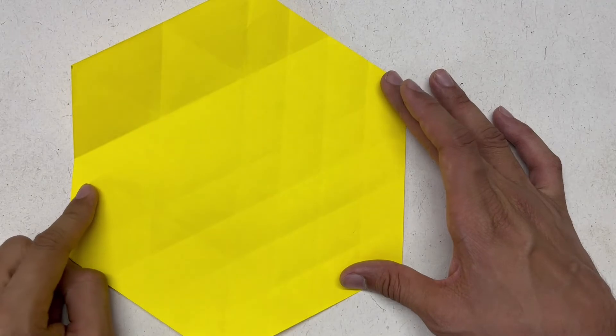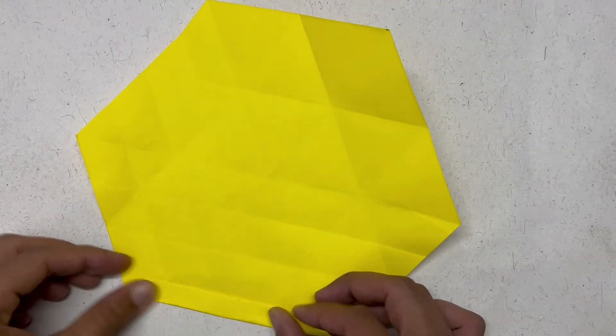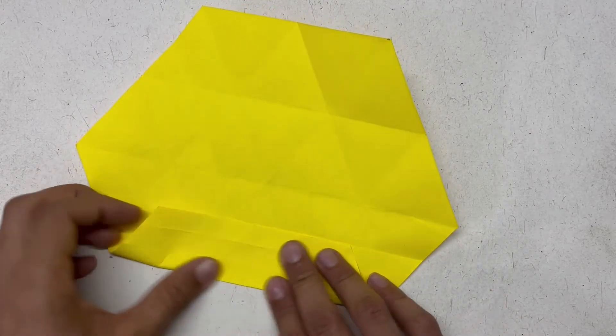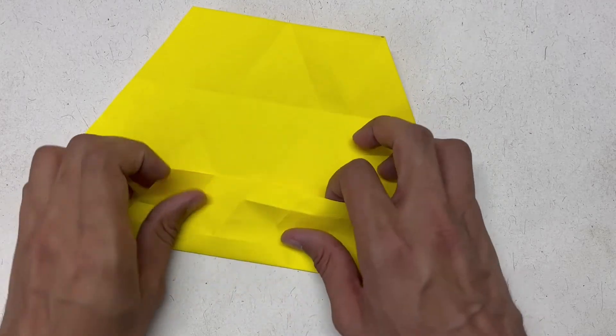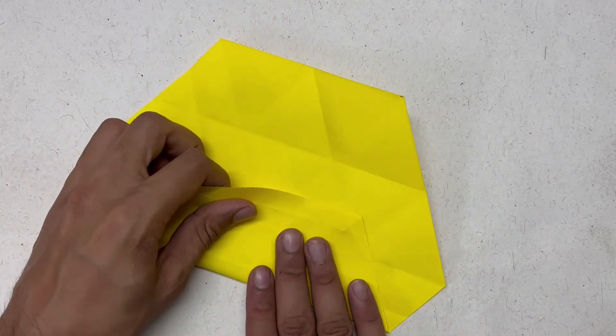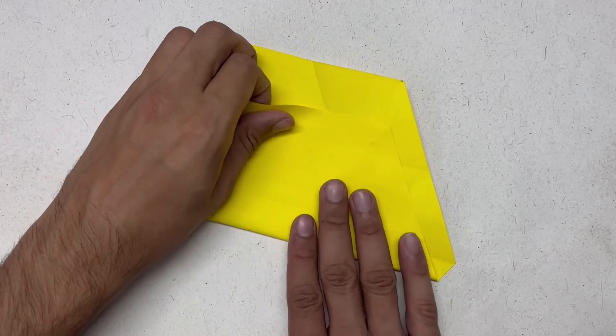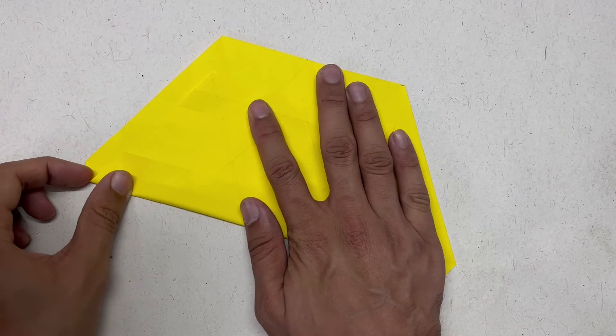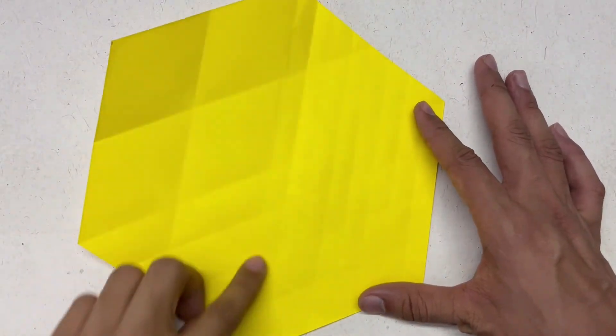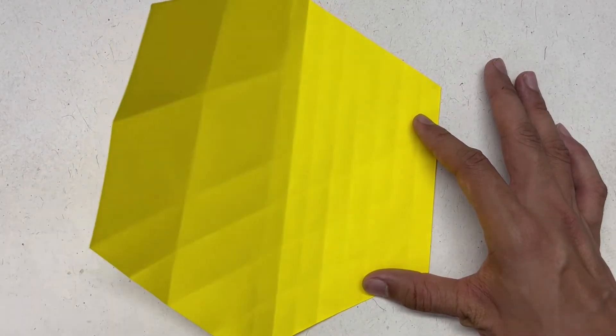This is one eighth. If you divide one eighth into halves, you'll get one sixteenth. Once you do this on all sides, you'll get a sixteen division triangular grid on a hexagon.